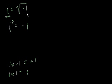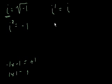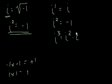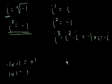i is equal to the square root of negative 1, and i squared equals negative 1. So let's think about the implications of this. i to the first power, just like anything else, is equal to itself. i squared, by this definition, is equal to negative 1. i to the third power would just equal i squared times i — and i squared is negative 1 — so it would be negative 1 times i, which equals negative i.